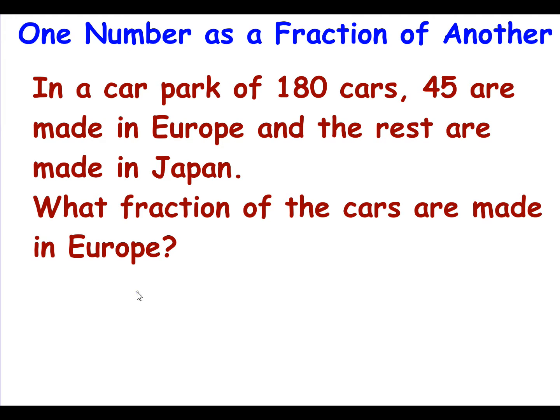So we have the fraction 45 over 180. These are the two numbers we've been given. So the smaller number is the numerator, the larger number the denominator. So that would get you the one mark. As soon as you write a fraction down it must come into your head, can I simplify? So is there a number that goes into 45 and 180? Well there is because they end in 5 and 0 so they must be divisible by 5.